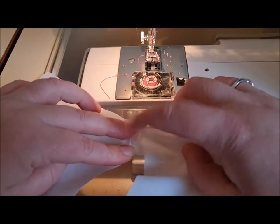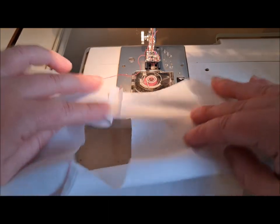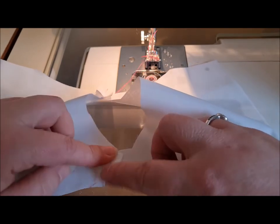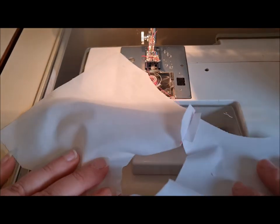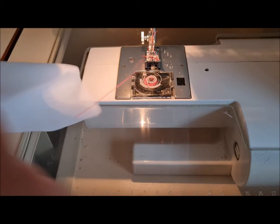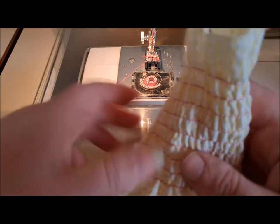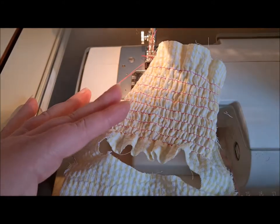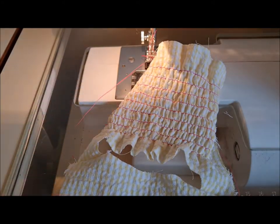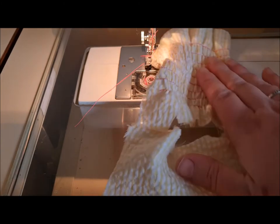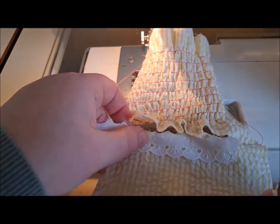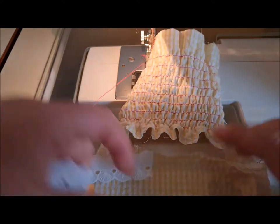I'm just going to finger press mine because I want to move on to the next part of the tutorial for you, which is trimming the neckline. What we're going to do is have a sandwich of seersucker, then our trim, then our lining, and start from the center back.